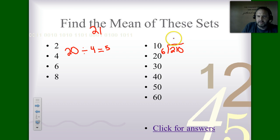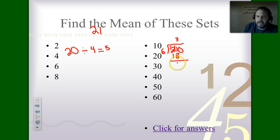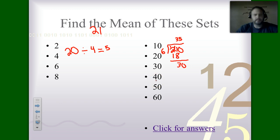Dividing 210 by 6: 6 goes into 21 three times (since 4 times 6 is 24, which is too big). 6 times 3 is 18, subtract to get 3, then bring down the 0 to get 30. 6 times 5 is 30, so the answer is 35. The mean of the second data set is 35.